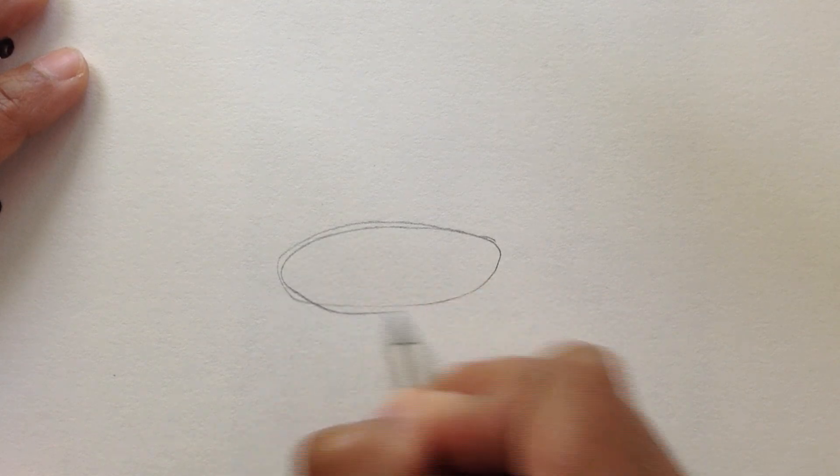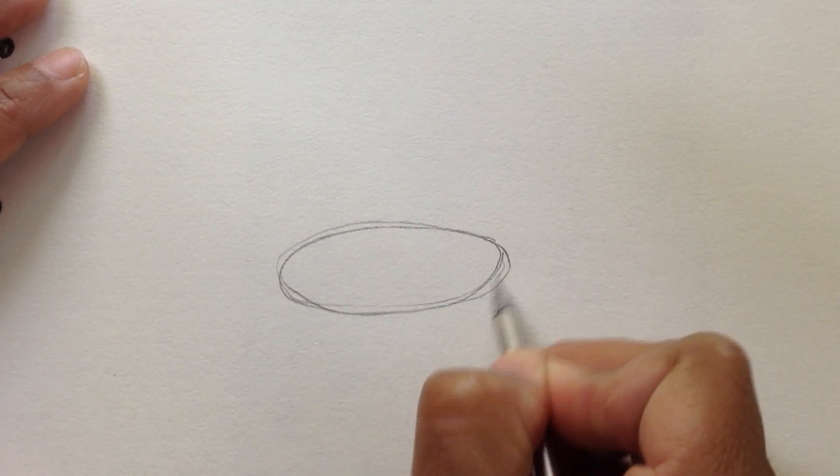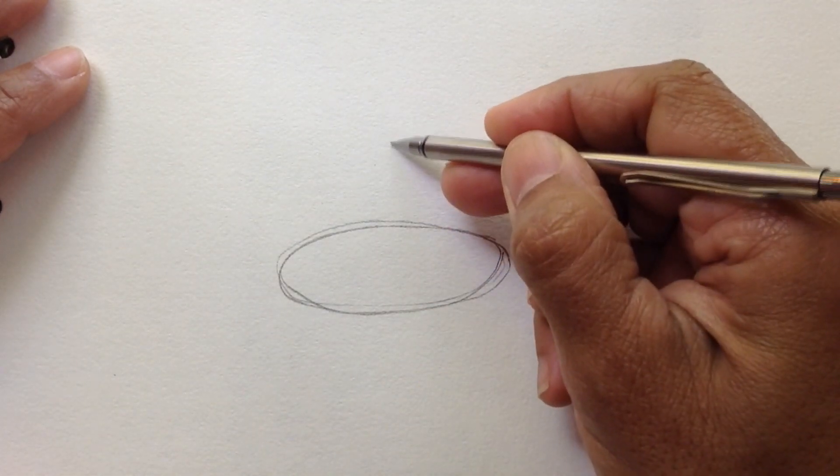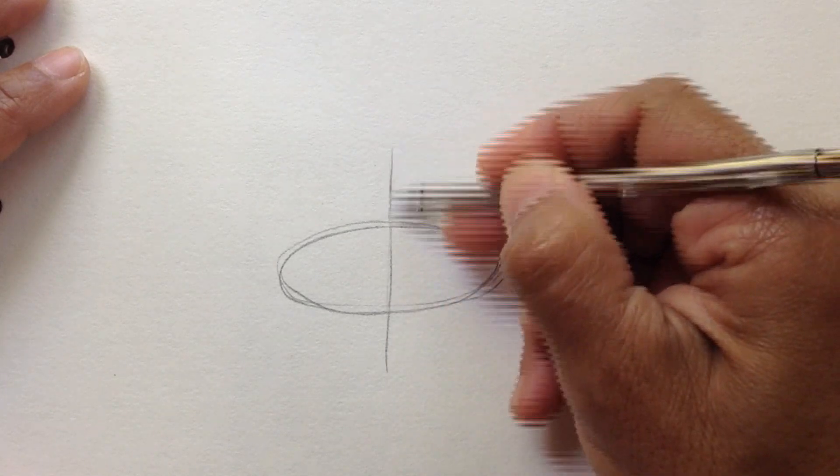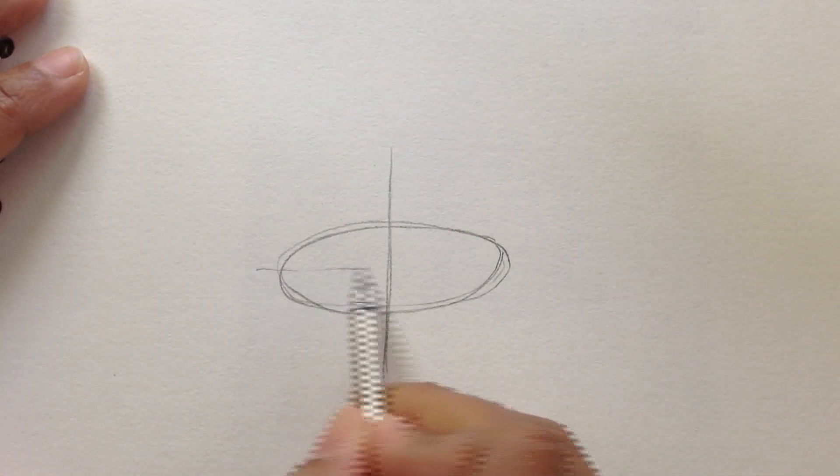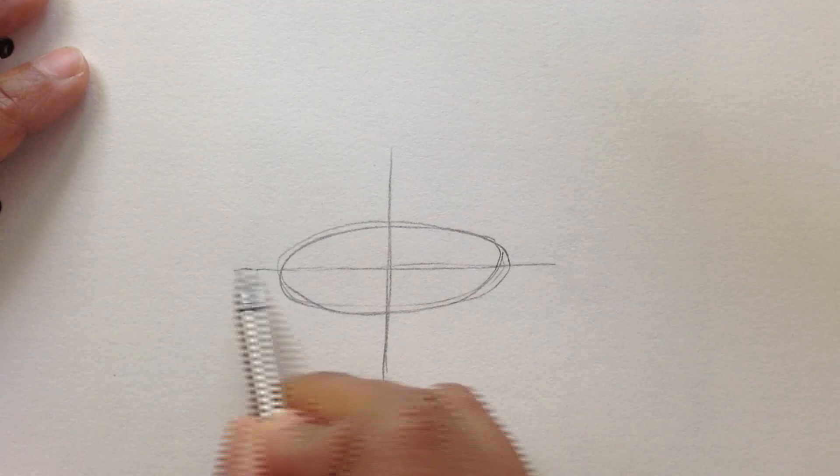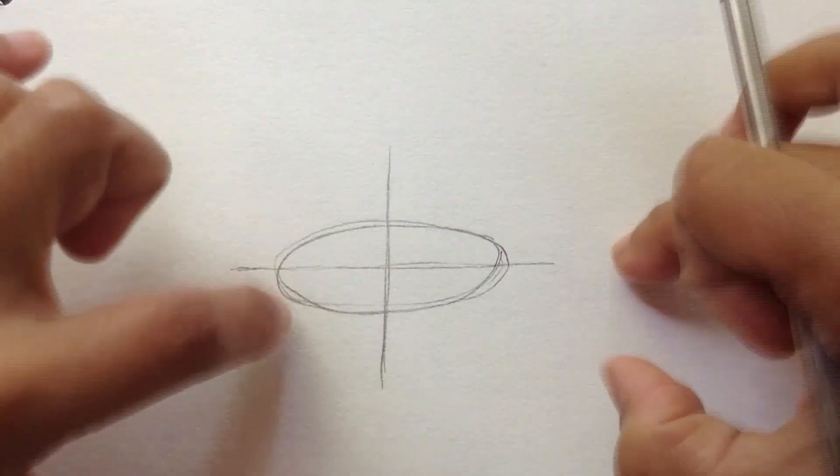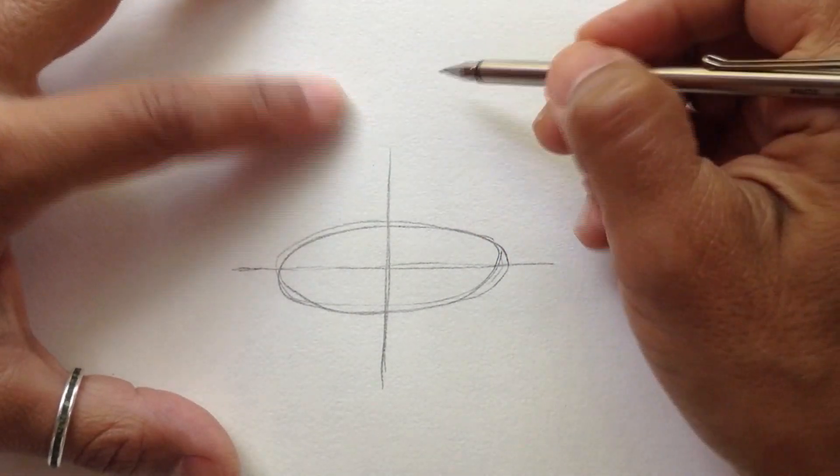First we will start by making an oval which is going to be the body of the fish. Now we will divide this oval with a vertical line and a horizontal line. These lines will help us to place the fins and the tail of our fish.